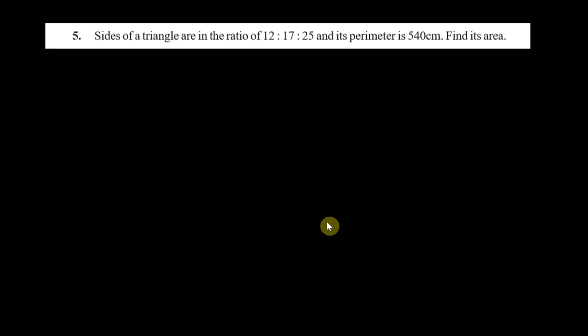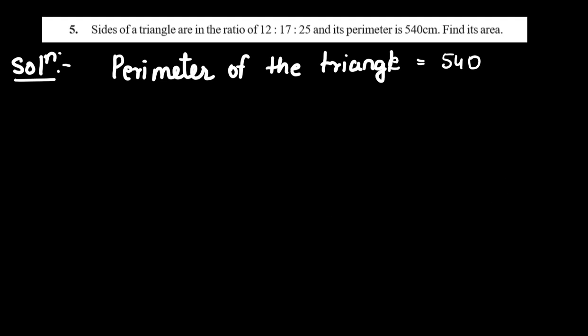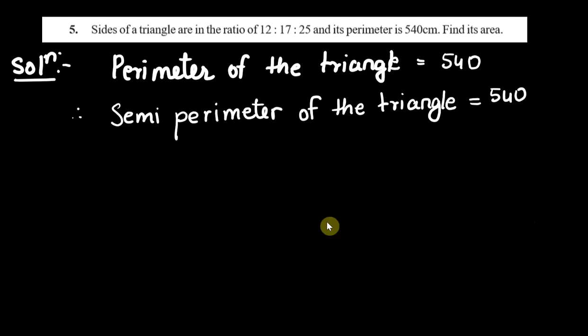Let us solve this question. First of all, perimeter is given so we'll quickly calculate the semi-perimeter. Perimeter of the triangle is given as 540, therefore semi-perimeter of the triangle equals 540 by 2, and that will be 270 centimeter.